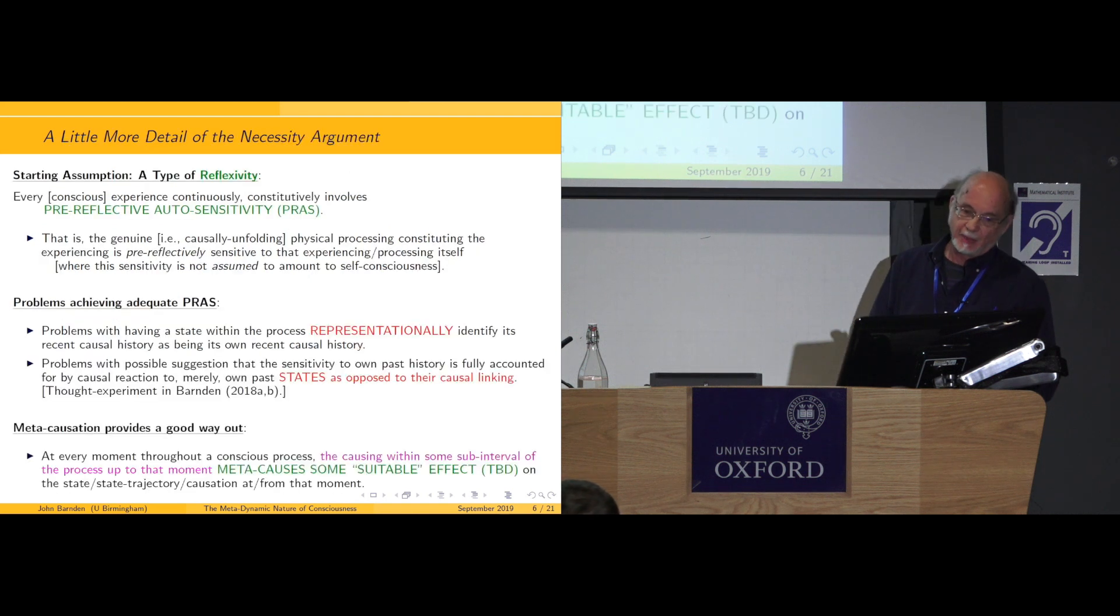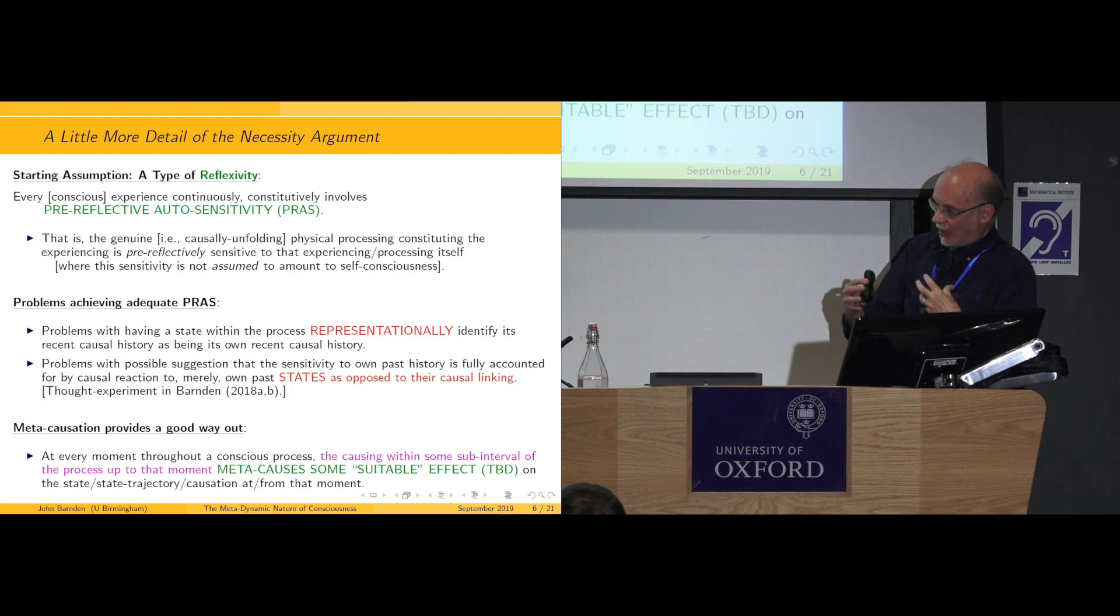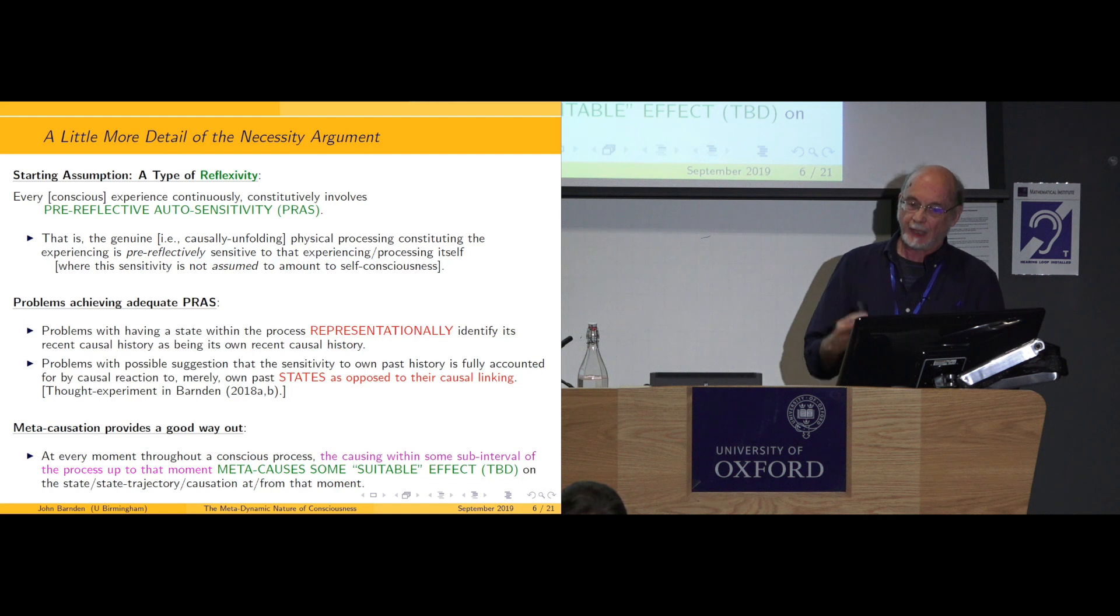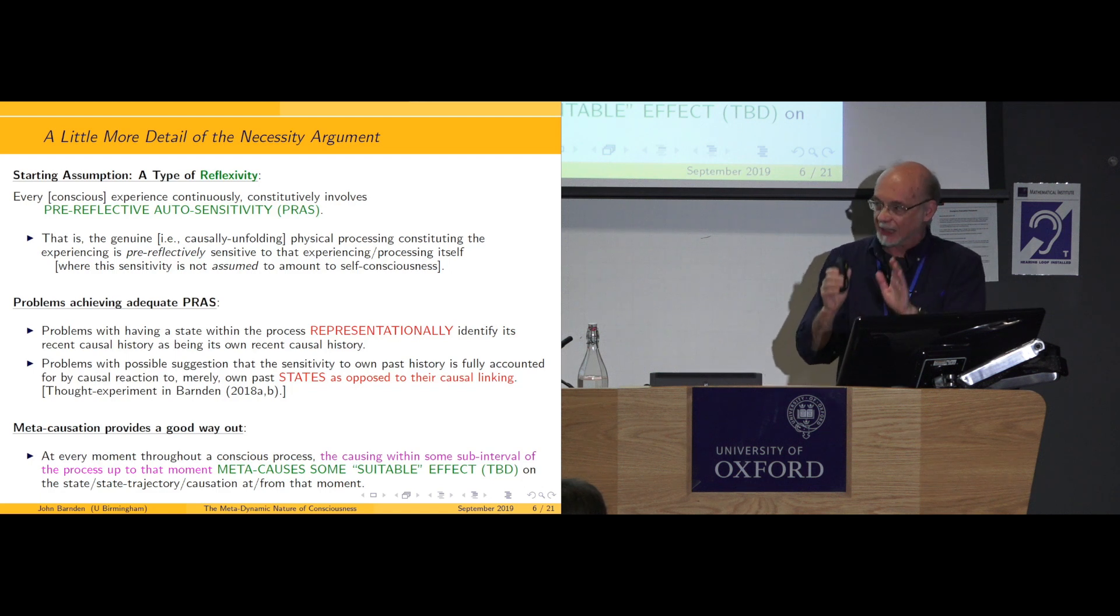So a little more detail of the argument that meta-causation is needed for consciousness. My starting assumption, this reflexivity assumption, I call it pre-reflective auto-sensitivity. The pre-reflective means non-conceptual, non-propositional, not involving thought in the normal sense. It doesn't involve concepts and so on. And so in particular, for example, this would be suitable for a worm. If you were to hypothesize that a worm is conscious, I'm not saying I'm doing that, but if you were to, the pre-reflectiveness here would be suitable for that purpose. Now the assumption is that the physical processing that constitutes an episode of experiencing is pre-reflectively sensitive to that very experiencing or processing itself. And the question then is going to be, how is it sensitive in that way? I'm not assuming that that necessarily amounts to self-consciousness, by the way. It's a weaker assumption, but it does build in, smuggles in an assumption that experiencing is identical to some sort of physical processing.